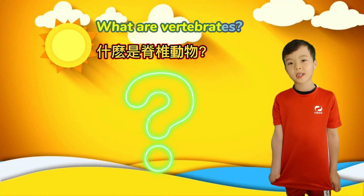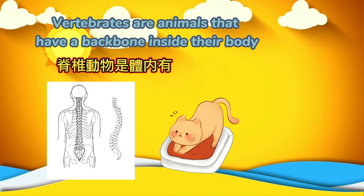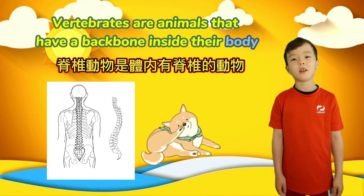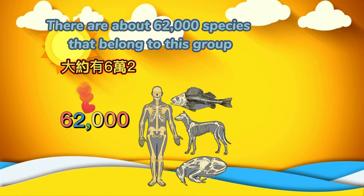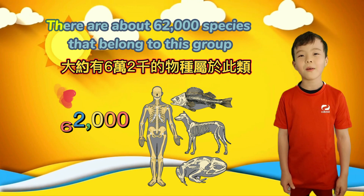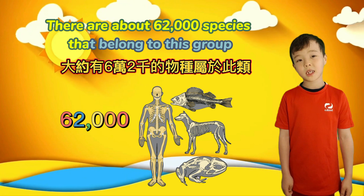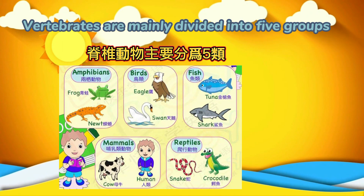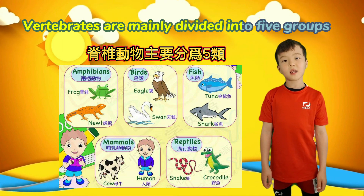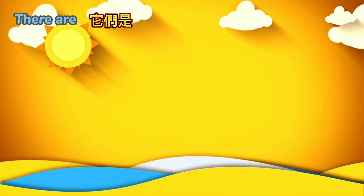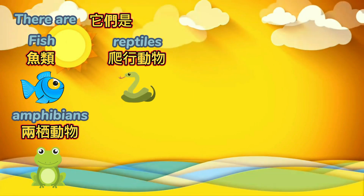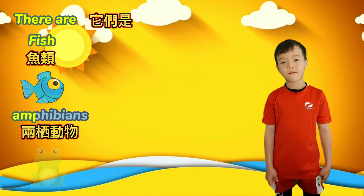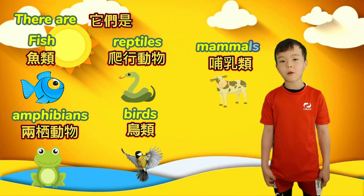What are vertebrates? Vertebrates are animals that have a backbone inside their body. There are about 62,000 species that belong to this group. Vertebrates are mainly divided into five groups. They are fish, amphibians, reptiles, birds and mammals, including humans.